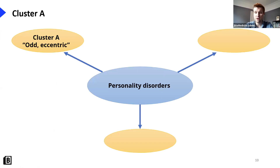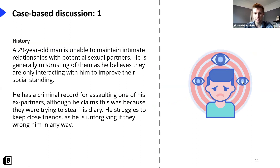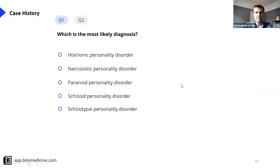Moving into Cluster A — a 29-year-old man is unable to maintain intimate relationships with potential sexual partners. He's generally mistrusting of them, believing they're only interacting with him to improve their social standing. He has a criminal record for assaulting an ex-partner, claiming they were trying to steal his diary. He struggles to keep close friends as he is unforgiving if they wrong him in any way. Which is the most likely diagnosis?